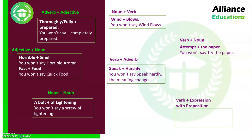Our last category is verb plus expression with preposition. Prepositions indicate positions and are a very important part of speech that we encounter frequently in grammar. The example here is 'burst into tears.' Whenever someone starts crying, in English we say 'he or she burst into tears.' 'Burst' means to explode or break open, but here we cannot say 'explode into tears.' We will always say 'burst into tears.'